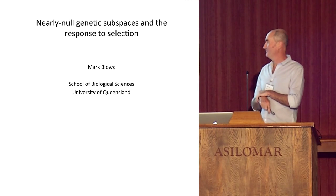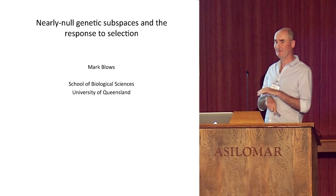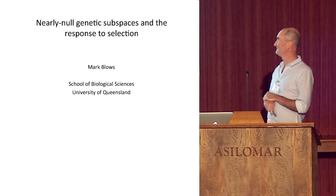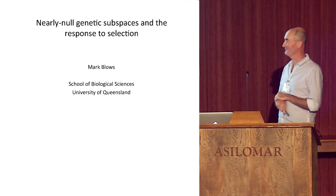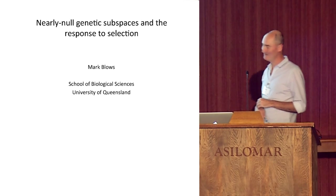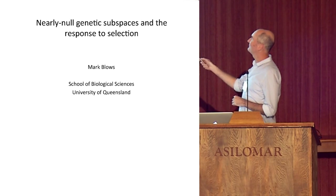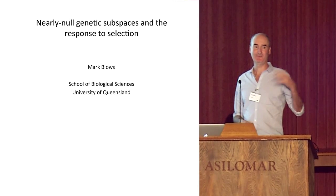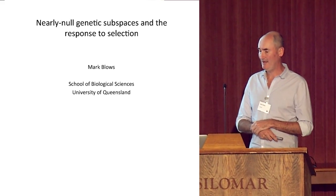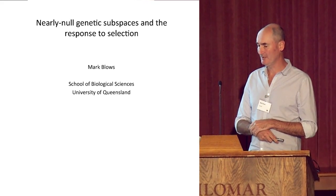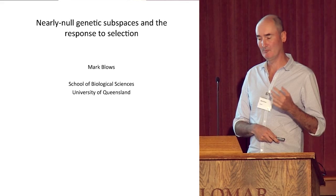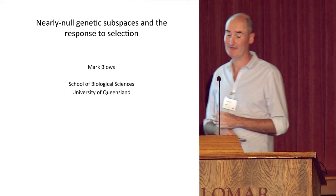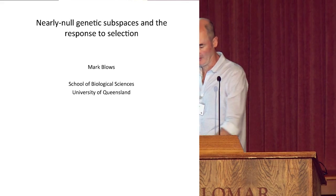I'd just like to have it recorded that I didn't mention G matrices first. But now we're onto the subject, we might as well hear about them some more. I'm going to be talking about these nearly-null genetic subspaces, which I'll define pretty soon, and how they could be quite prevalent and quite important in the response to selection, particularly in small populations.